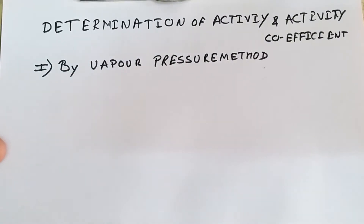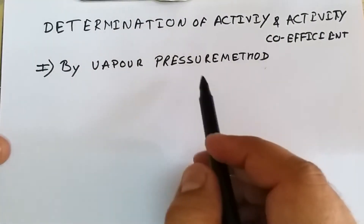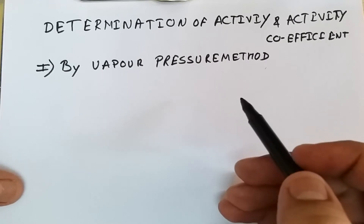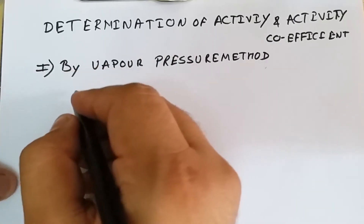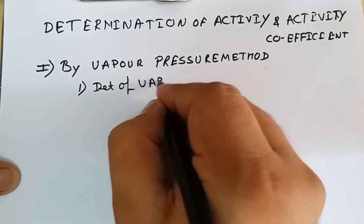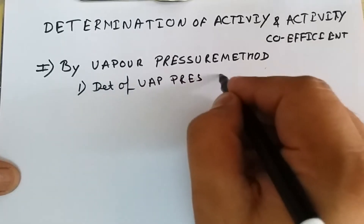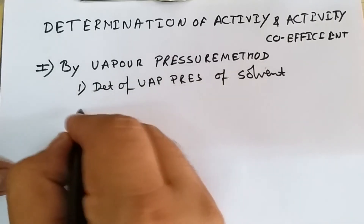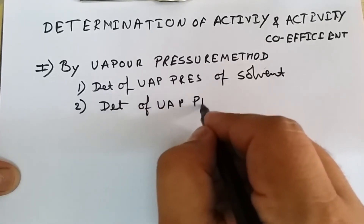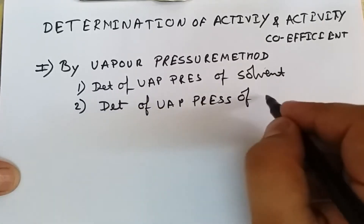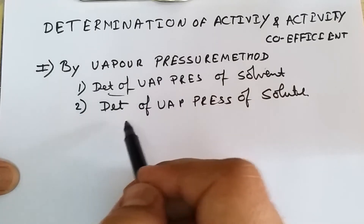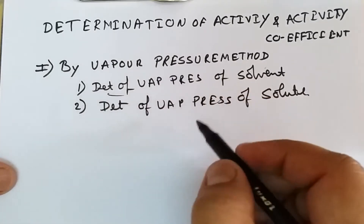Welcome back. Today we are going to determine the activity and activity coefficient by using a vapor pressure method. This method can be further studied in two categories: first is determination of the vapor pressure of solvent, and second is determination of vapor pressure of solute. We will first determine the vapor pressure of solvent, then the vapor pressure of solute.